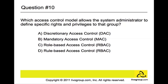The last question is question number ten: which access control model allows the system's administrator to define specific rights and privileges to a group? The answer is D, rule-based access control. In this type of access control, access is allowed or defined to objects based on the set of rules defined by the system's administrator.